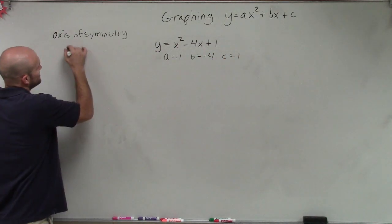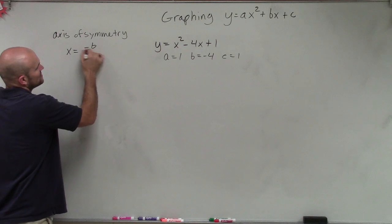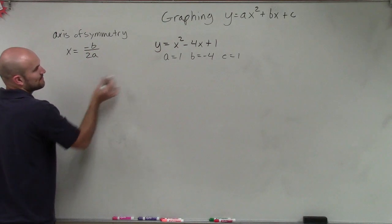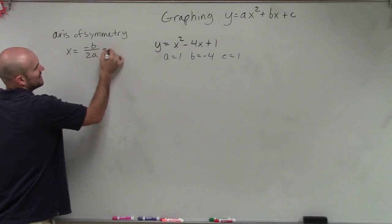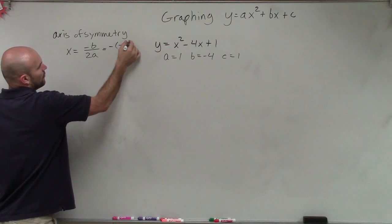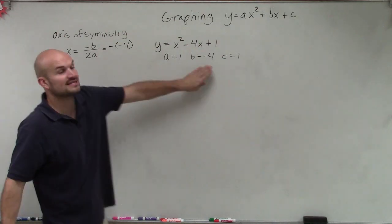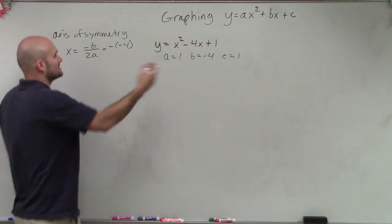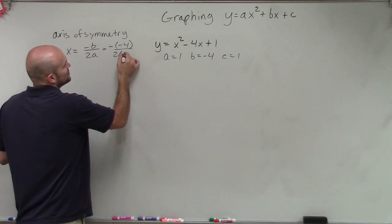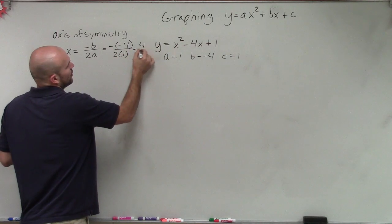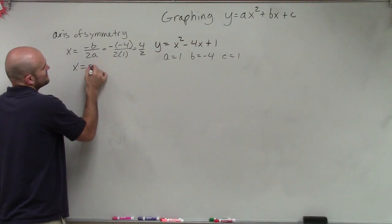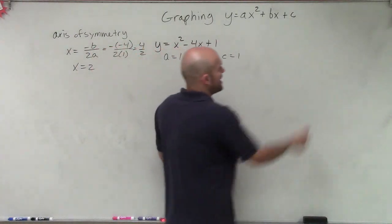The axis of symmetry is a vertical line where we have x equals opposite of b divided by 2a. So opposite of b is opposite of negative 4, which is 4, divided by 2 times 1. Therefore, that's 4 over 2. So the axis of symmetry equals 2.